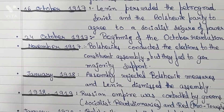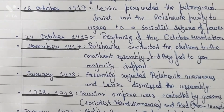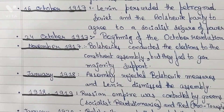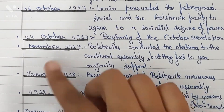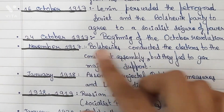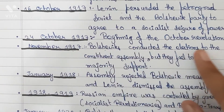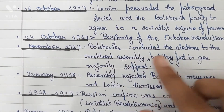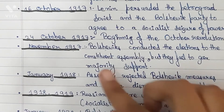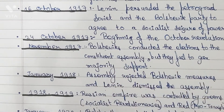24th October 1917: beginning of the October Revolution. November 1917: the Bolsheviks conducted elections to the Constituent Assembly but they failed to gain majority support.